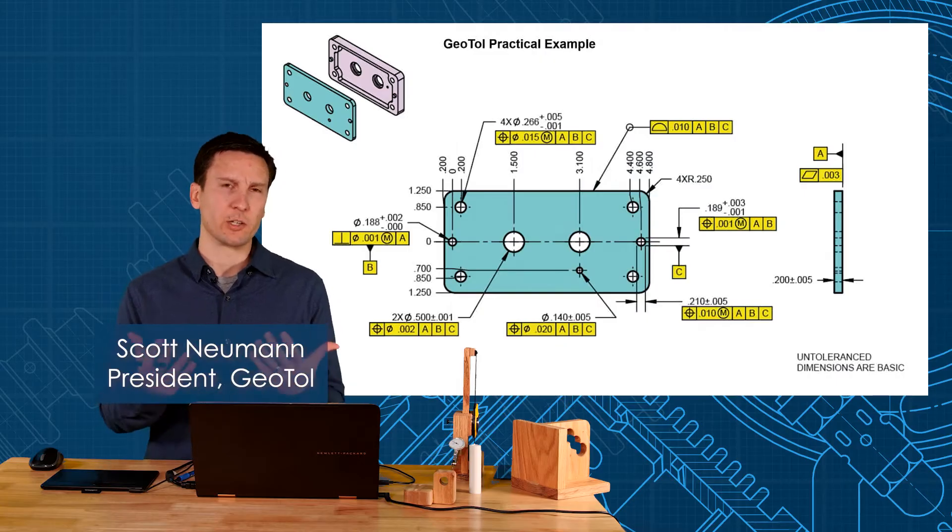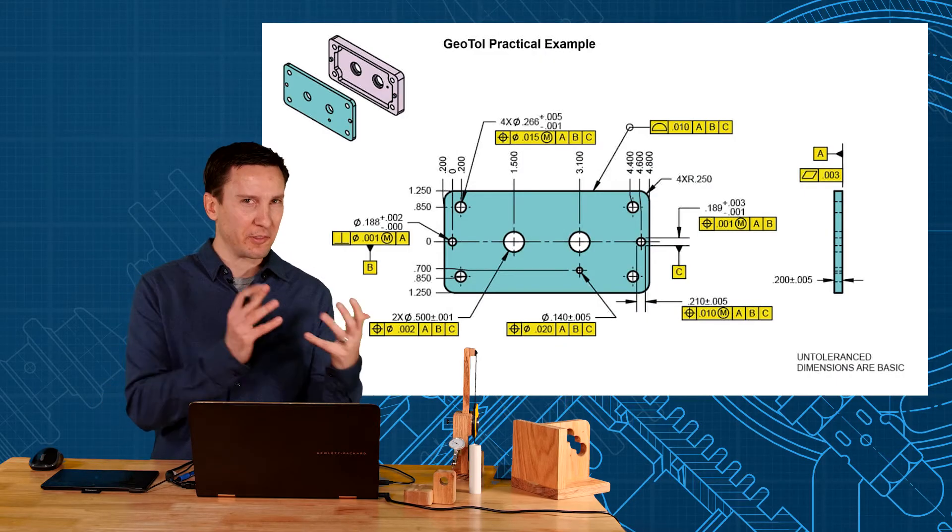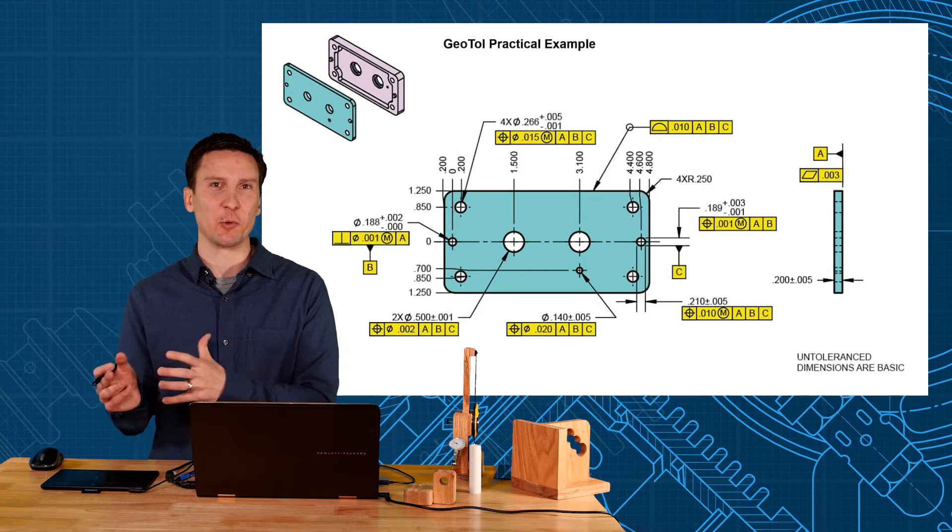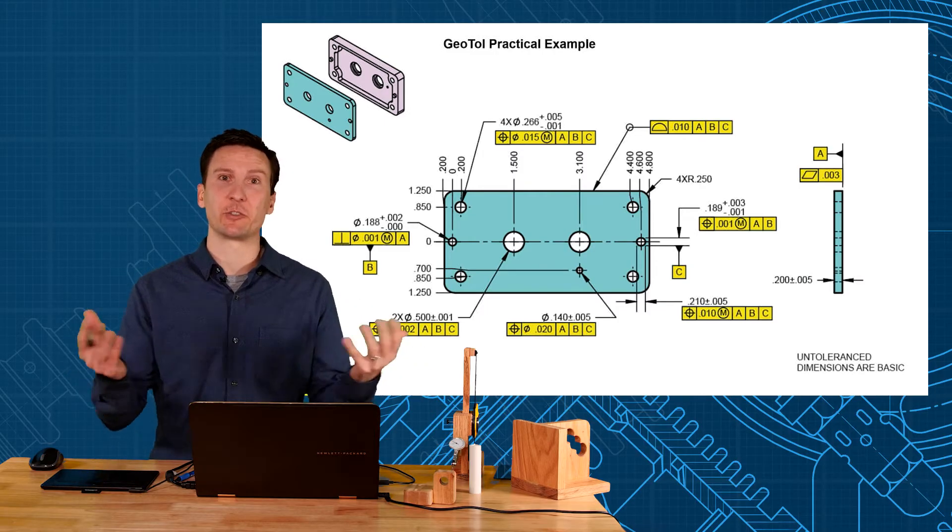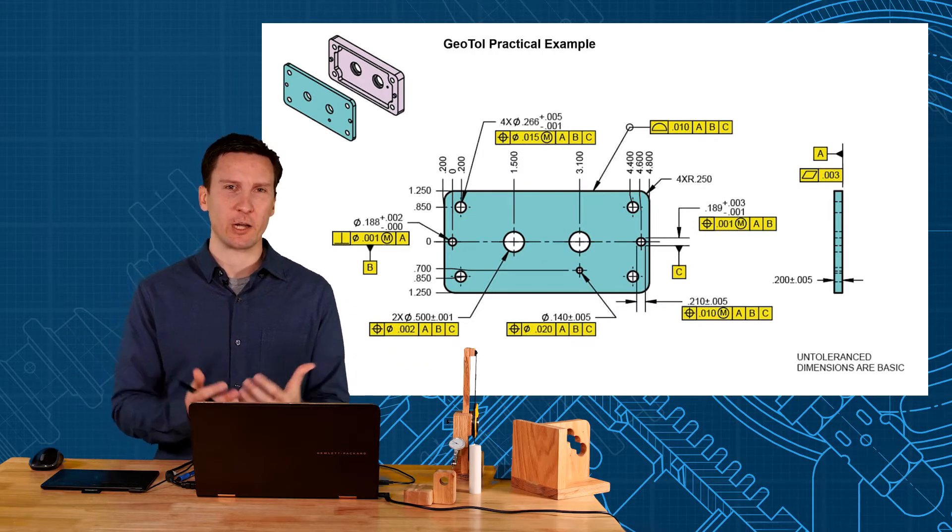I wanted to finish this unit with a practical application here. I've shown a lot of theory on how all the geometric symbols work, but I wanted to show geometric tolerancing in action. What would it look like on a real part?